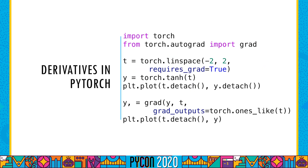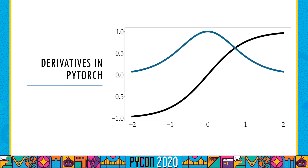Now PyTorch looks pretty similar to JAX, but we have to annotate the code in a few places to be really specific about what we are taking a derivative of and what size the output will be. You can see requires_grad=True, you can see some calls to dot detach, and then you can see the grad_outputs argument when we call grad on y and t. Again, this is the plot which is identical to the previous ones. Remember, these libraries are implementing the same collection of algorithms, so you can pick the one that best suits your need.